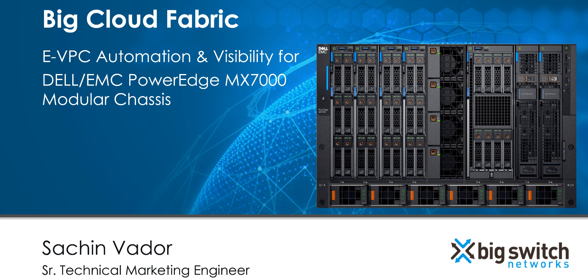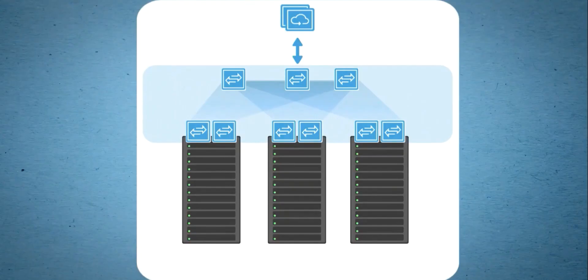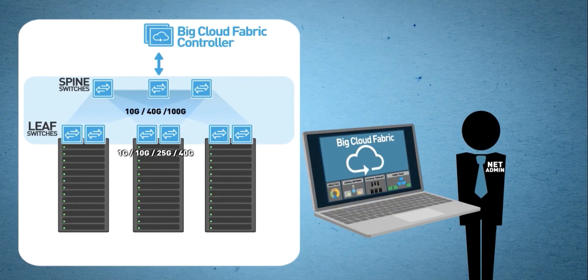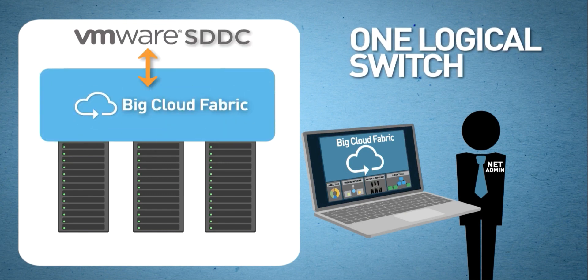Hello, in this demo we will see how the Bicloud Fabric integrates with the Dell MX7000 powerhead chassis and greatly simplifies network provisioning and provides real-time visibility into the MX7000 chassis. Bicloud Fabric is powered by an SDN controller to build a leaf spine fabric using open networking switches. Unlike box-by-box networks, Bicloud Fabric provides a single pane of glass and integrates with various VMware SDDC products and operates the entire fabric as a single logical switch.